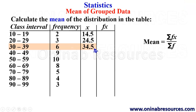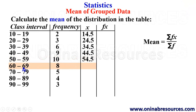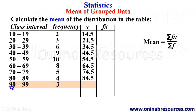Continuing with the mid-values: 40 plus 49 gives 89; 89 divided by 2 gives 44.5. 50 plus 59 gives 109; 109 divided by 2 gives 54.5. 60 plus 69 gives 129; 129 divided by 2 gives 64.5. 70 plus 79 gives 149; divided by 2 gives 74.5. 80 plus 89 gives 169; divided by 2 gives 84.5. 90 plus 99 gives 189; 189 divided by 2 gives 94.5.